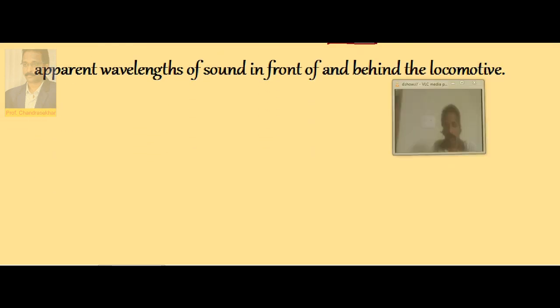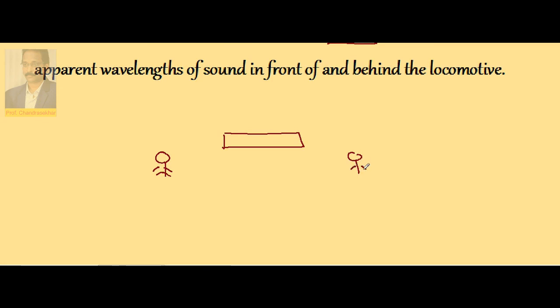We know that apparent frequency—let us say this is a locomotive. One person is standing here, another person is standing here, and it is moving like this. So let us calculate the frequencies perceived by them. This one is N1 and this person is N2.